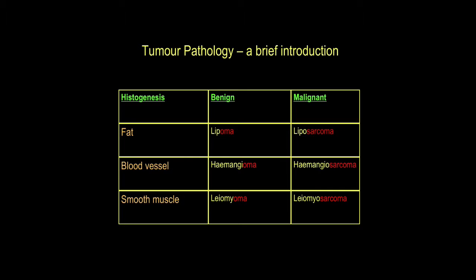In terms of other soft tissue types — with exceptions to these general rules — for fat tumours: lipoma and liposarcoma. For blood vessels: haemangioma and haemangiosarcoma. For smooth muscle, the prefix is leiomyo-: leiomyoma, a good example being the fibroid uterus, and leiomyosarcoma as its malignant counterpart. Benign ones can indeed change into malignant ones. A nice example is von Recklinghausen's disease, where patients have multiple tumours of nerve origin, which may turn into neurosarcomas or neurofibrosarcomas.